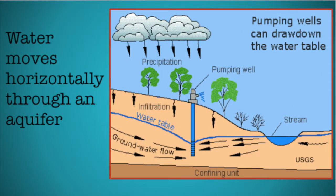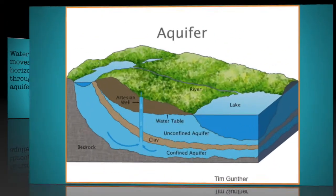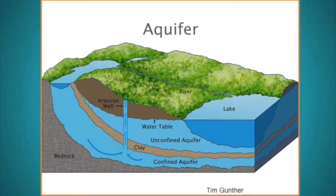Water in an aquifer can also move horizontally. An unconfined aquifer has the upper boundary as the water table. These aquifers can be closer to the surface than other types of aquifers. The lower boundary of all aquifers is a confining layer of rock with basically no permeability.